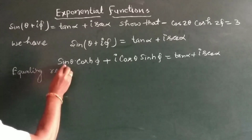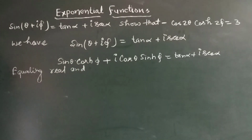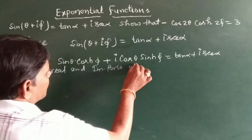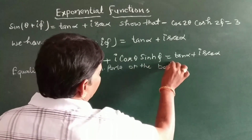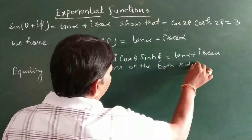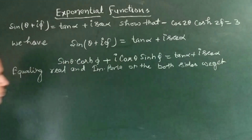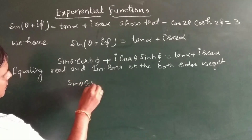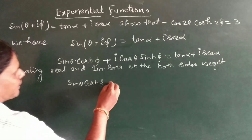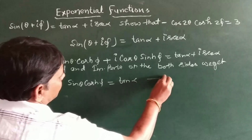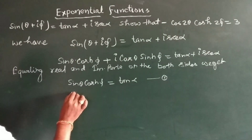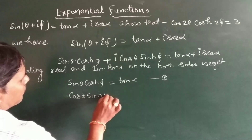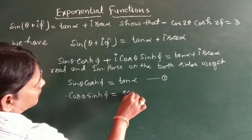Equating real and imaginary parts on both sides, we get: sin θ·cosh φ = tan α, and cos θ·sinh φ = sec α.